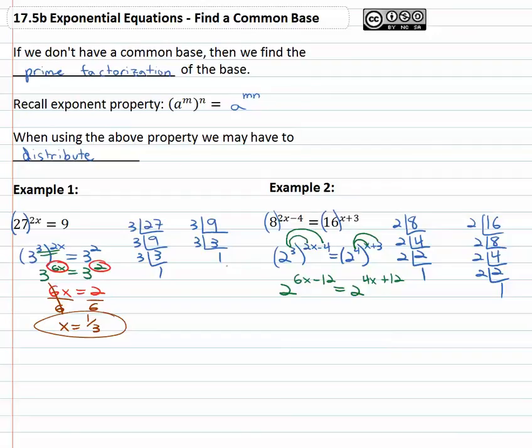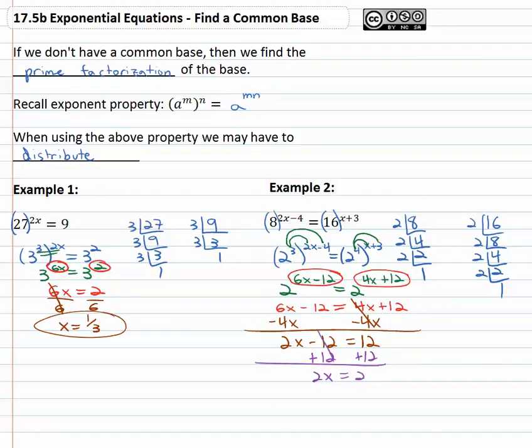Now we notice we've got that common base that we wanted. Both have a base of 2, which means the exponents must be the same. 6x minus 12 must be equal to the 4x plus 12. We now have a linear equation we can quickly solve to find our solution. First, get the variable on one side by subtracting 4x from both. 2x minus 12 is equal to 12. Adding 12 to both sides, 2x is equal to 24. And finally, dividing both sides by 2, we find out x is equal to 12.